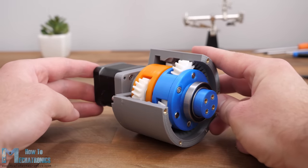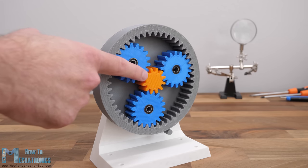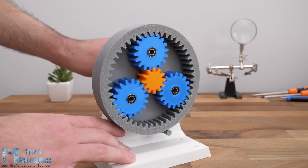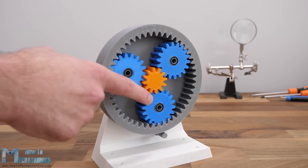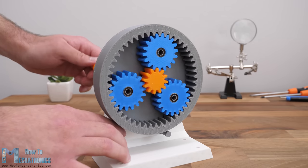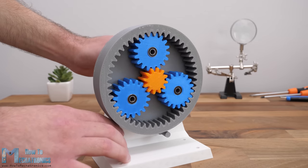A planetary gear set is composed of four main components. In the center we have a gear called sun gear, which is usually the input that drives the motor. Then we have three or more gears that orbit around the sun gear, which are called planet gears.